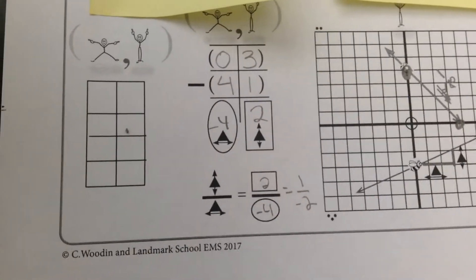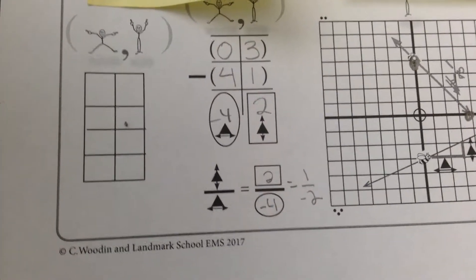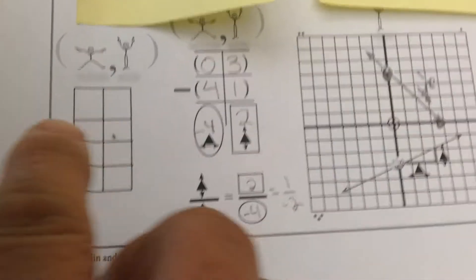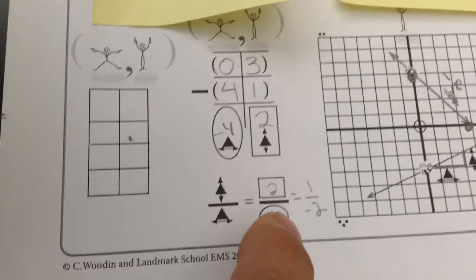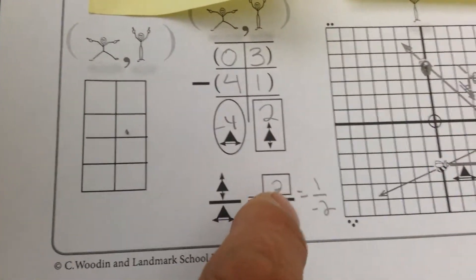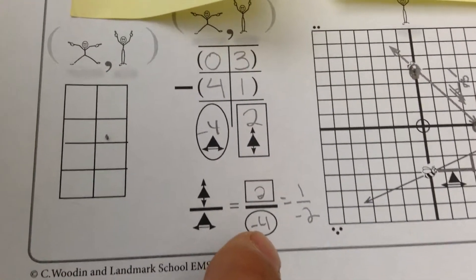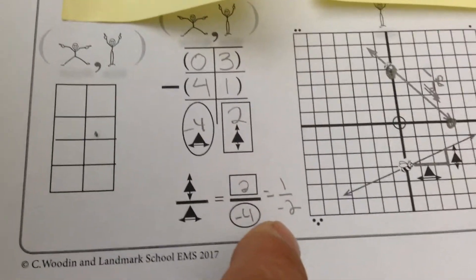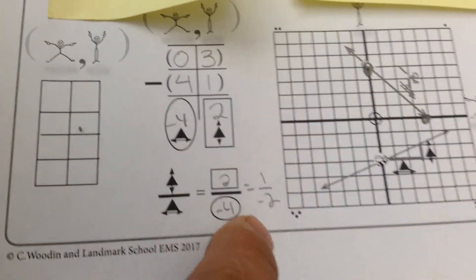So you put the data in there, the points (0,3) and (4,1). Then you found the change in x and the change in y. And you've put that in the template. The change in y is 2, change in x is negative 4. And you simplified that to 1 over negative 2, or negative 1 half. And that's right. Nice job.